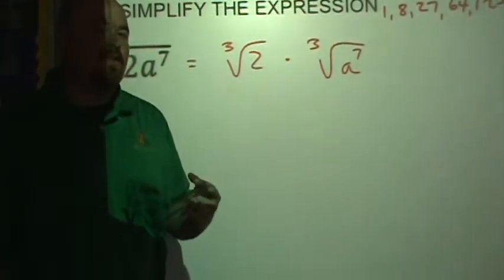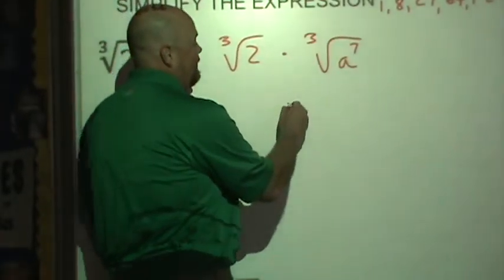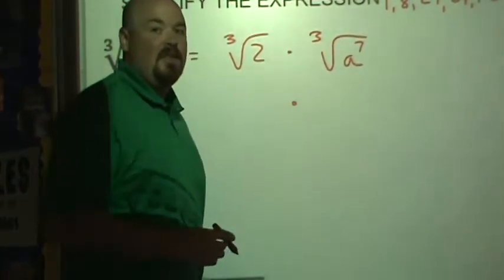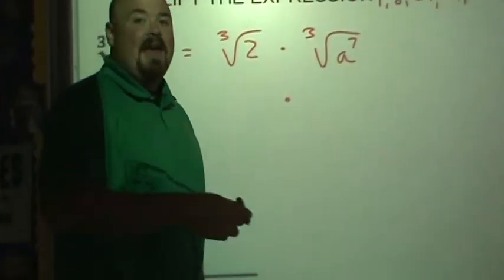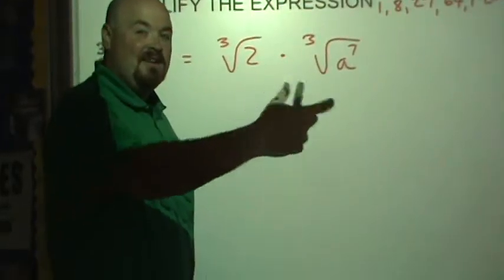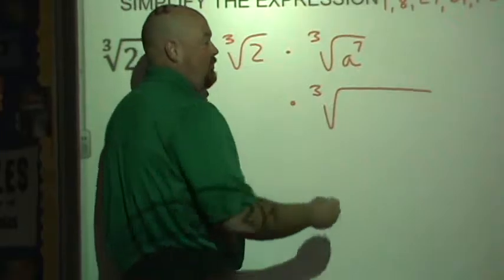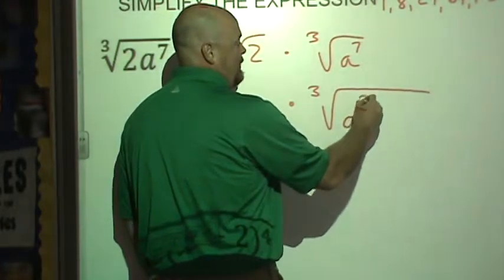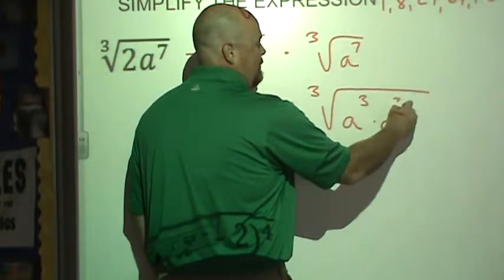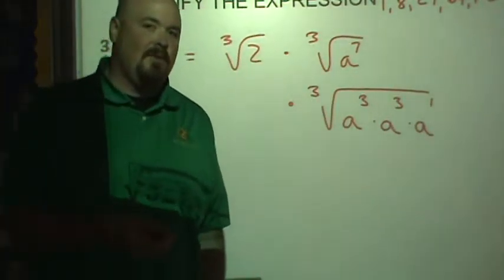And the key to this is understanding what I call the decomposition of the power. That is, a to the 7th is a times a times a times a, seven times. Well, I can break that into chunks where, using some of our exponent rules from the past, this is really a cubed times a cubed times a to the first. Now why am I choosing cubes?